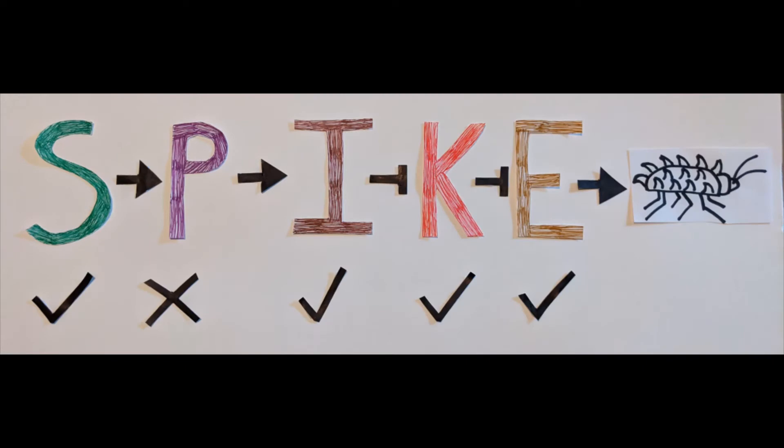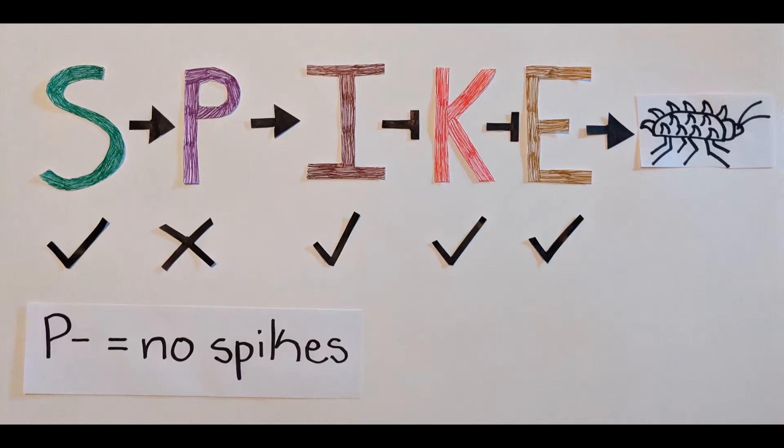For the first mutation, the P gene is removed. When this happens, S does not have P to activate, meaning I no longer has anything to activate it. If the I gene is not activated, it cannot inhibit K, which means E can no longer produce spikes. So when the P gene is removed, the cells do not produce spikes.